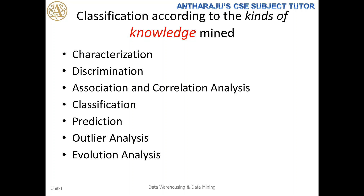Similarly, with respect to knowledge, the data mining system will differ. The knowledge types include: characterization, discrimination, association, correlation, classification, prediction, outlier analysis, and evaluation analysis. All these represent different levels of knowledge you can extract, and that is why we classify the data mining system with respect to knowledge.